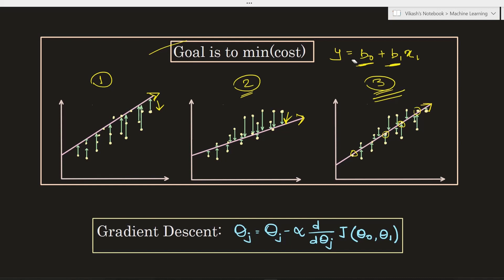So far we have not drilled into the mathematics, so you can feel comfortable with the topic. But the reality is that without exploring the mathematical aspect you will not gain a strong grip on gradient descent. To quickly revise: gradient descent is an algorithm that helps us minimize the cost function — the loss — by adjusting the parameters to achieve a best fit line or the best parameters for our machine learning model.